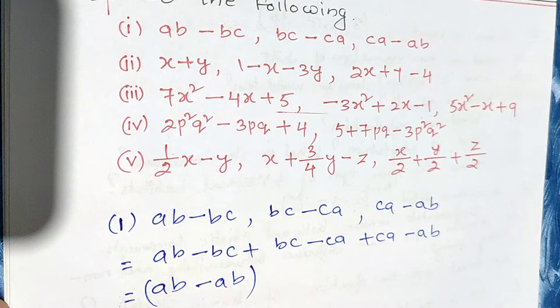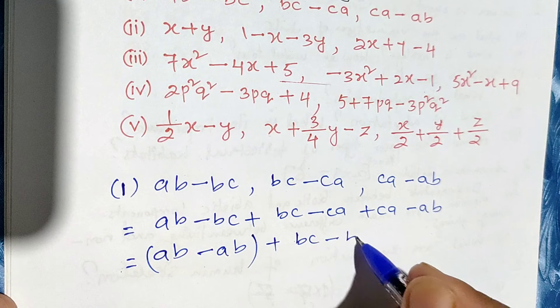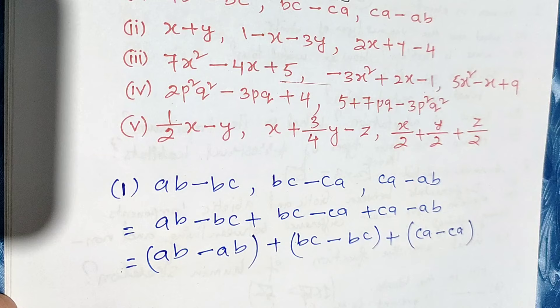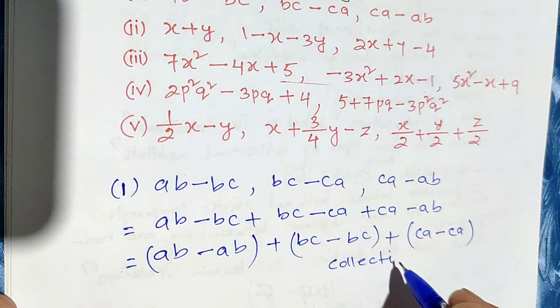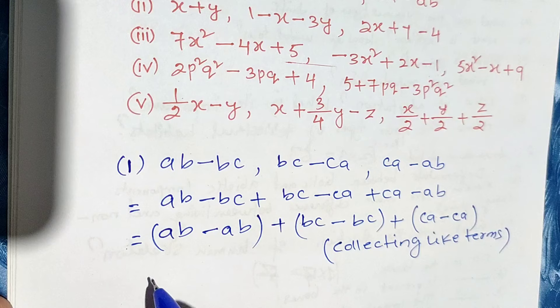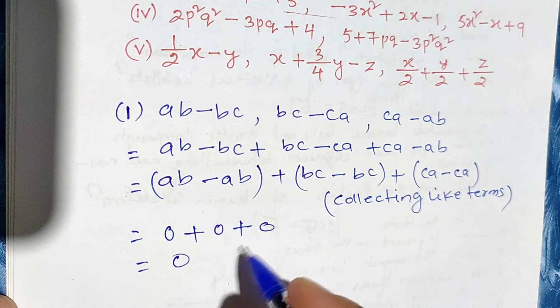Then plus bc and minus bc together; then plus ca and minus ca together. That is called grouping or collecting like terms. Now ab minus ab will be 0, plus bc minus bc will be 0, plus ca minus ca will be 0. So the answer will be 0.